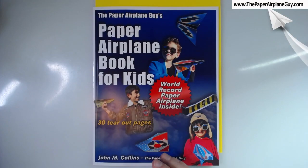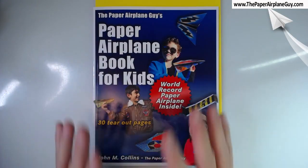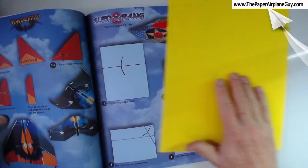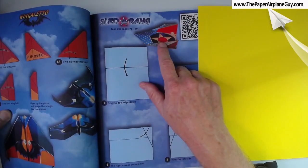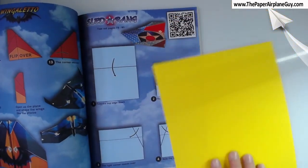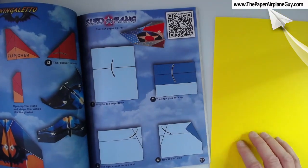Hey, the Paper Airplane Guy again. I'm walking you through all of the planes from my new book, The Paper Airplane Guy's Paper Airplane Book for Kids. And this is really, really a beginner book. The plane we're going to make right now is called the Sled-A-Rang. It's a cool looking plane. It'll circle back for you. It'll ride thermals outdoors, a great indoor-outdoor plane.